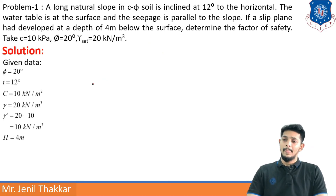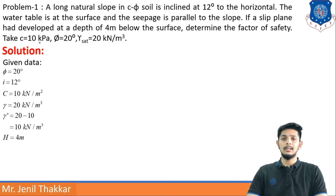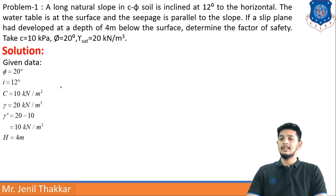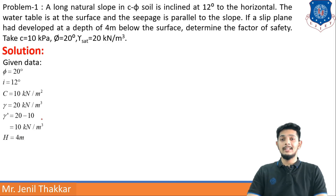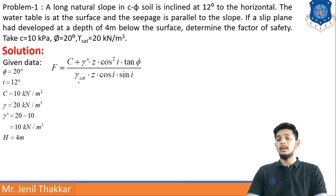Writing the given data: φ = 20 degrees, angle of inclination i = 12 degrees, c = 10 kN/m². Whenever kPa is used, it is equivalent to kN/m². γ_saturated = 20 kN/m³, so γ_dash (submerged unit weight) = γ_saturated − γ_w = 20 − 10 = 10 kN/m³. Depth H = 4 meters.